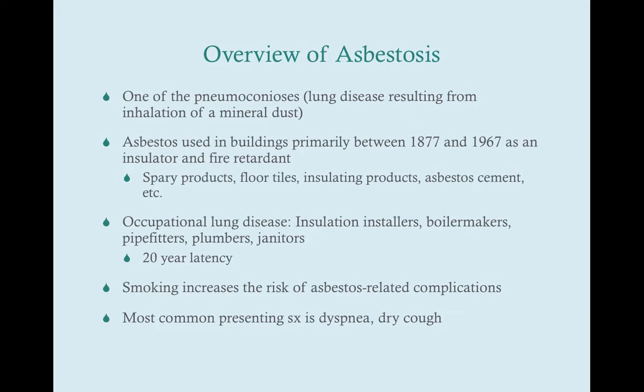Asbestos was a flame retardant and insulator used in buildings primarily after the industrial revolution and up until the 1970s, when it was found to be a dangerous material associated with pulmonary disease. Even though it was used in buildings between 1877 and 1967, that doesn't mean you can't be exposed to it now. There are still buildings that have asbestos, fewer and fewer, but they still exist.